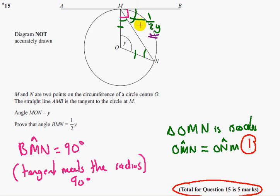The second mark comes from either saying angle OMN is equal to angle ONM, or that you could show that you've worked out angle OMN by doing 180 take away this, dividing by 2 to leave you with angle OMN, which we've done here.